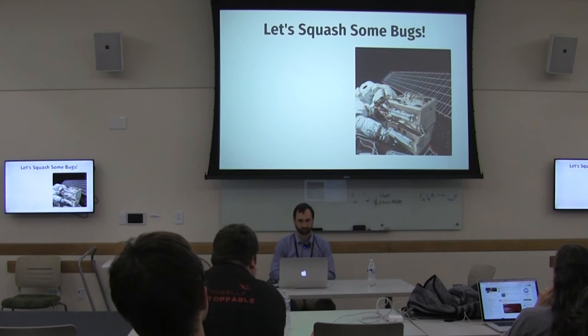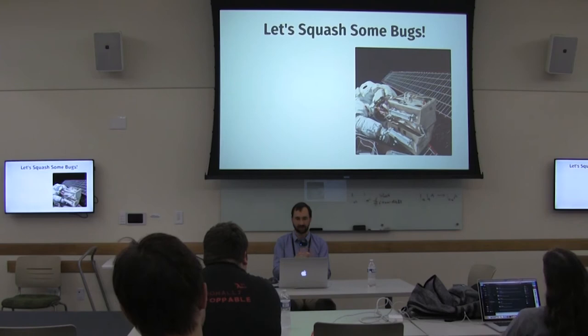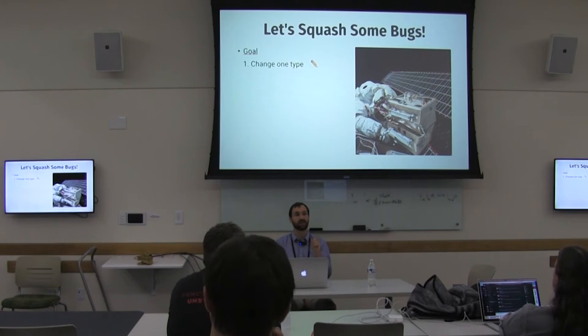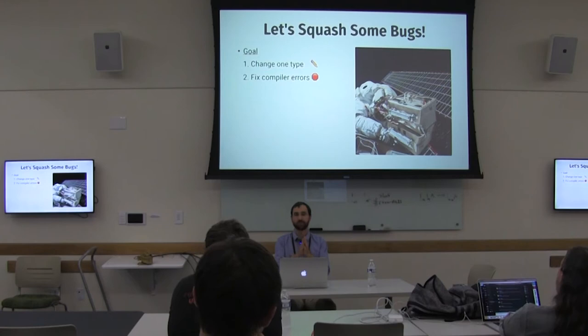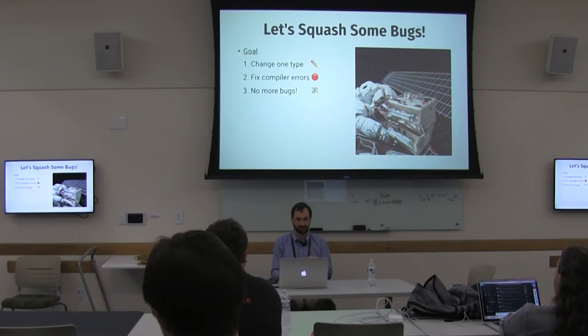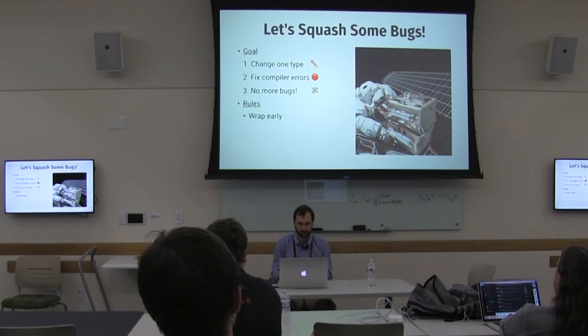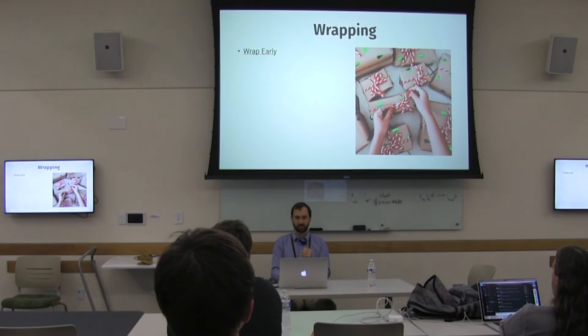With that technique in mind, let's try to squash some bugs. Our goal is to change one type in a single place in our code, then fix compiler errors — making only changes the compiler tells us to make. It's going to be completely compiler-driven, and then we'll have no more bugs. To do that, we're going to follow two simple rules: wrap early and unwrap late.